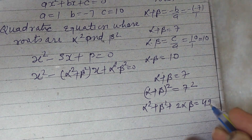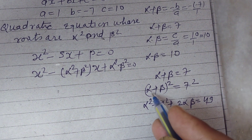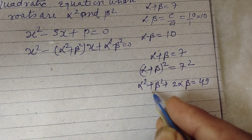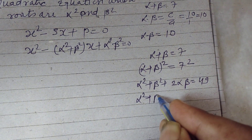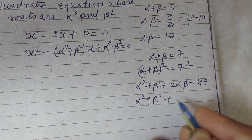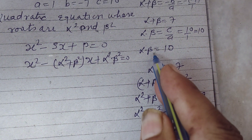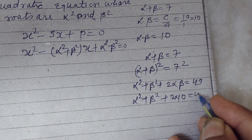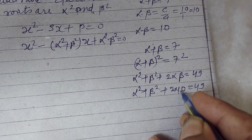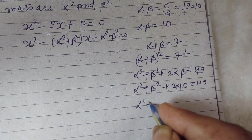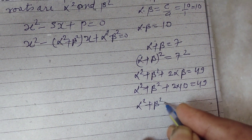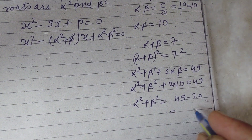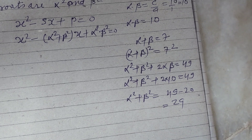Since alpha into beta equals 10, we have 2 times alpha times beta equals 20. Therefore alpha squared plus beta squared equals 49 minus 20, which is 29.